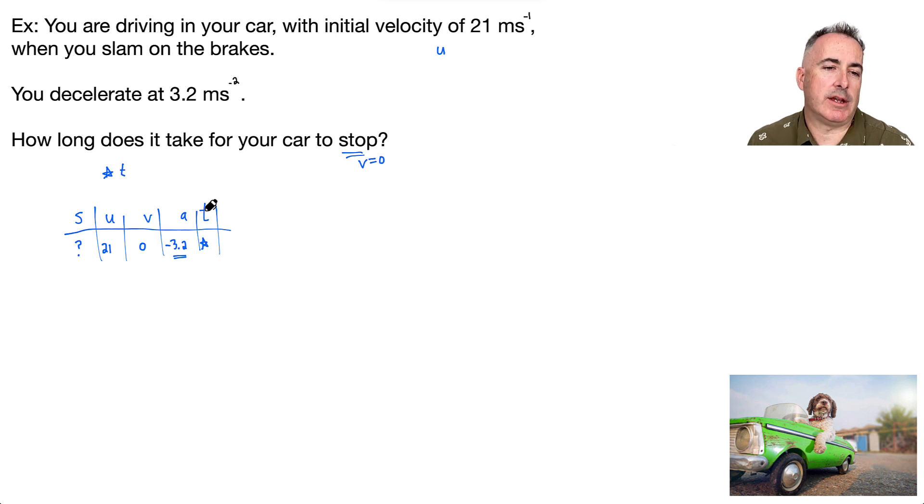So do I have an equation? Look at your data booklet now. Do we have an equation that has T that doesn't have S? Yeah, there is one actually. It's just V equals U plus AT. Sometimes there's multiple equations you can use, but I'm lazy. I just try to use the easiest one I can find. That's the simplest looking one to me.